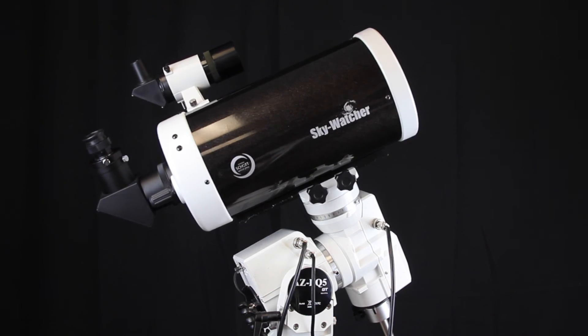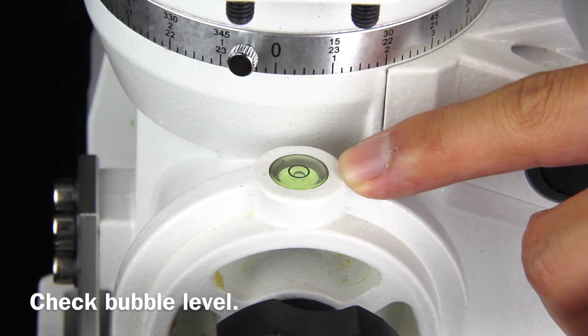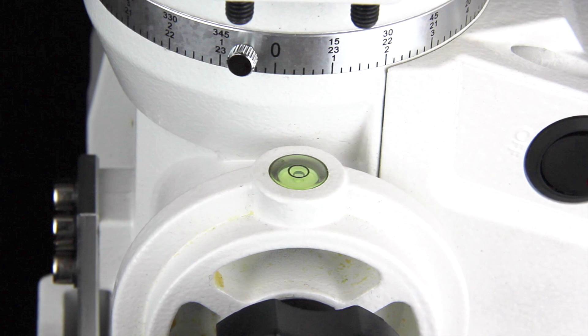For daytime alignment, first make sure your mount is on a flat surface by checking the bubble level. This increases the accuracy of the go-to function.